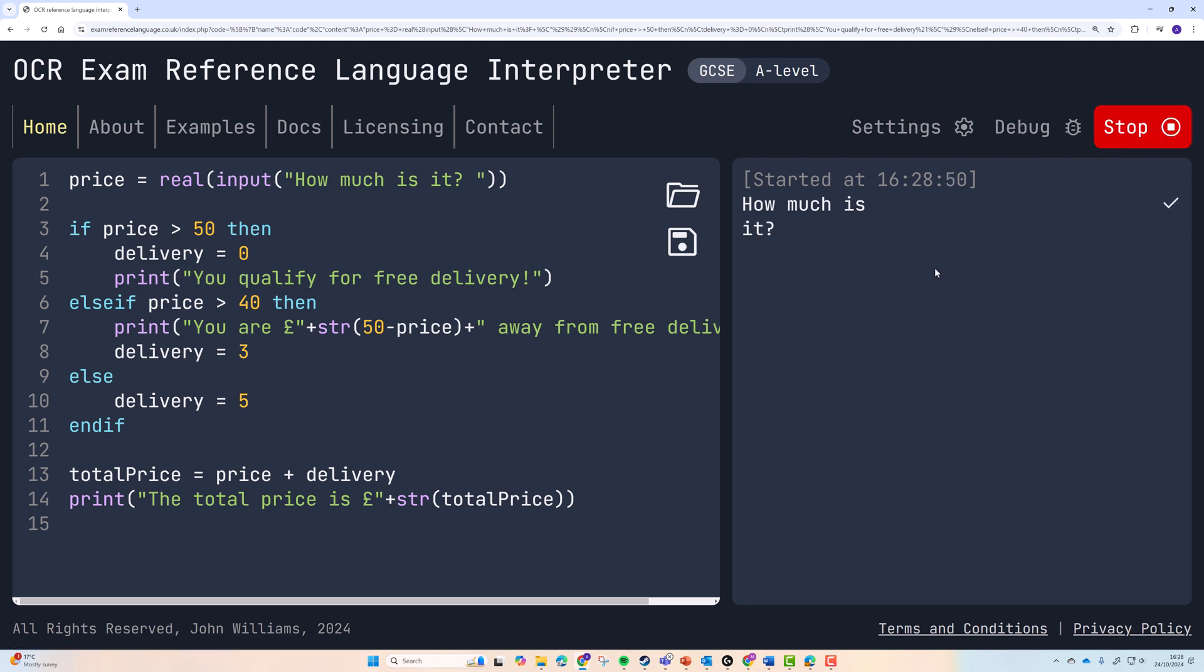So I have a total price of seventeen pounds. So immediately, because of the selection, the program is doing different things depending on what I type in.